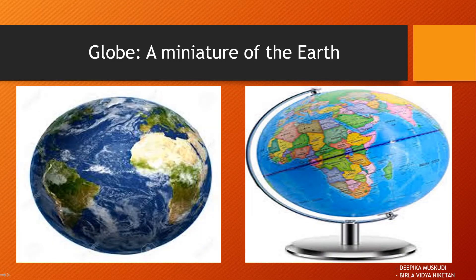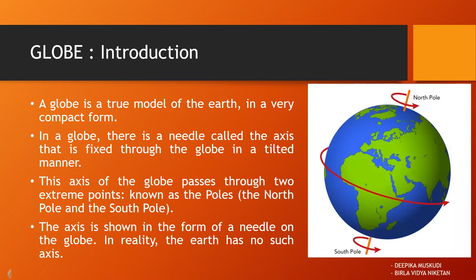A globe is a miniature of the earth. It shows the shape and location of the continents and oceans. Different places can be located on a globe. Globes may be of varying size and types. There are big ones which cannot be carried easily, and small pocket globes and globe-like balloons which can be inflated and are handy and carried with ease. The globe is not fixed; it can be rotated the same way as a top spin or a potter's wheel. A globe is a true model of the earth in a very compact form.